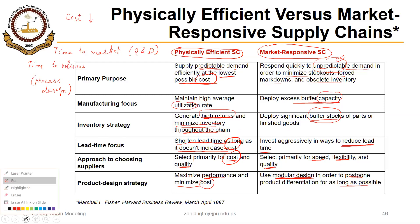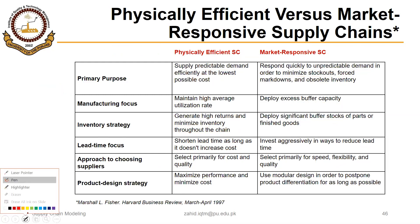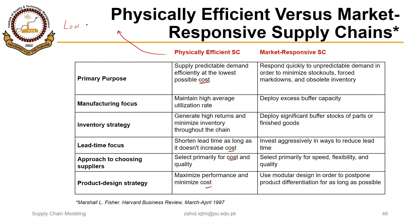You may have realized that the efficient supply chain is focused on reducing costs, so the business strategy being utilized is likely the low-cost provider strategy, typically using a make-to-stock production environment. For the responsive supply chain, the strategy is most probably a differentiation strategy, using either assemble-to-order or make-to-order production environments.